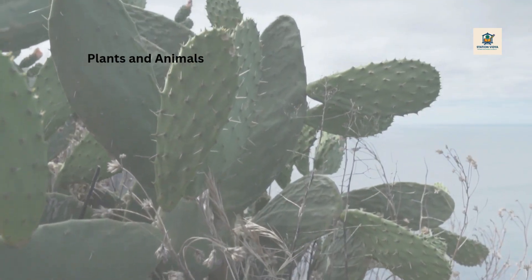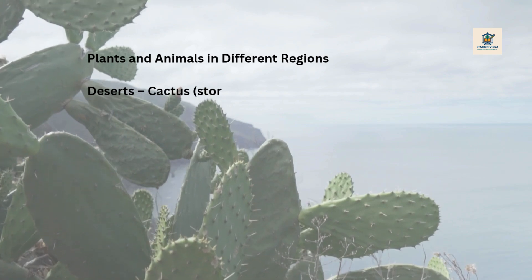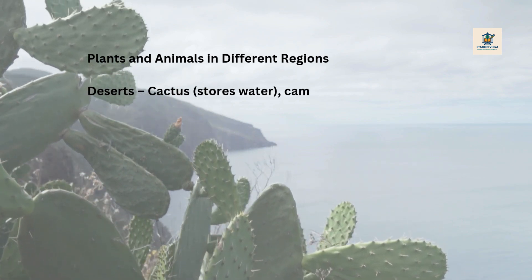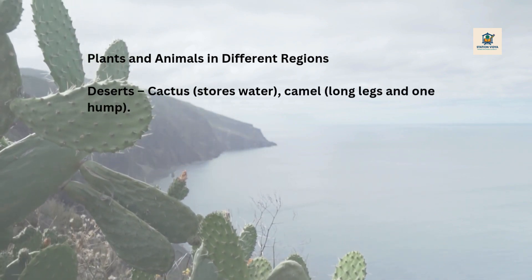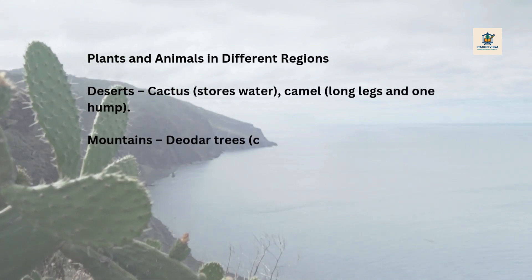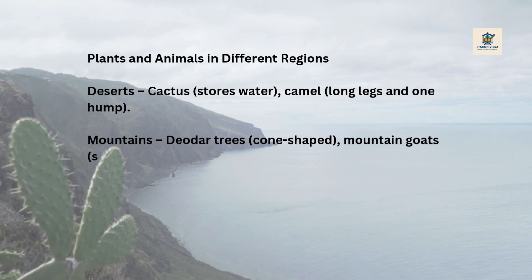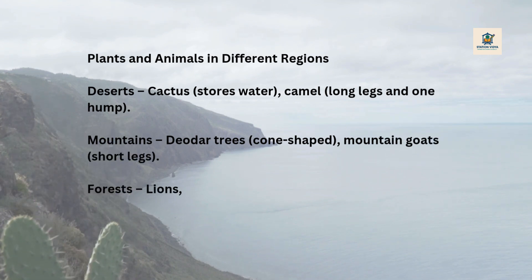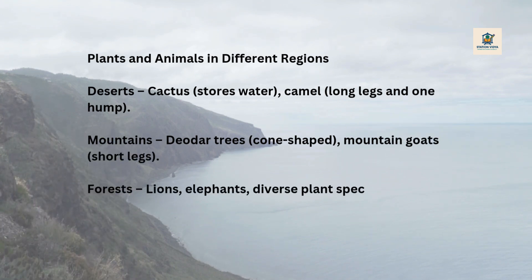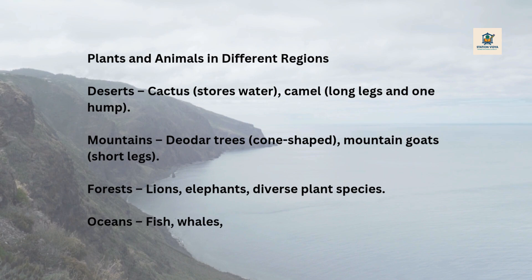Plants and animals in different regions. Deserts: cactus stores water; camel has long legs and one hump. Mountains: deodar trees are cone-shaped; mountain goats have short legs. Forests: lions, elephants, and diverse plant species. Oceans: fish, whales, sea turtles.